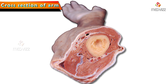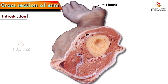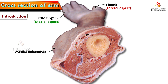Hi there, I am here to demonstrate the transfer section of arm. So here you can see the image of transfer section of arm. Look at this thumb which is present on the lateral aspect and here is the little finger on the medial aspect, and we can also see the medial epicondyle which is a bony landmark formed by the medial epicondyle of humerus.